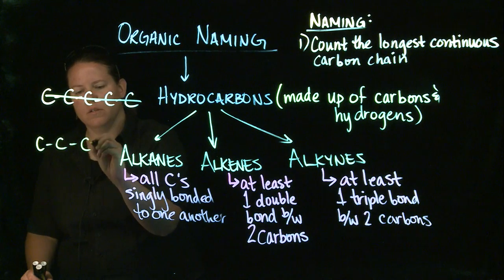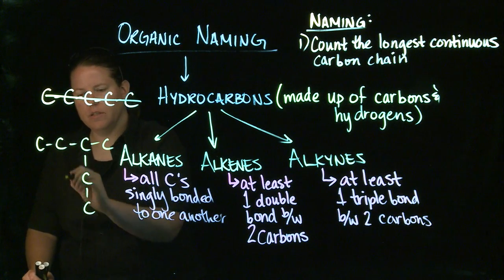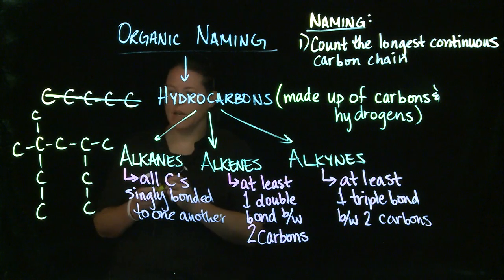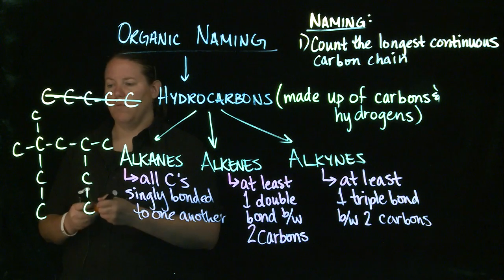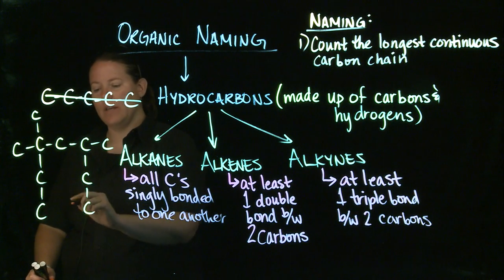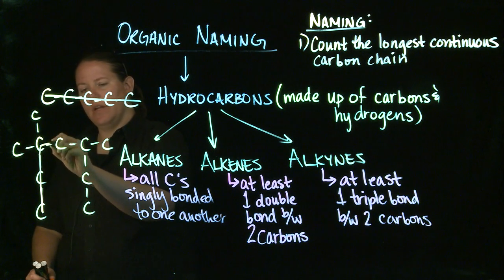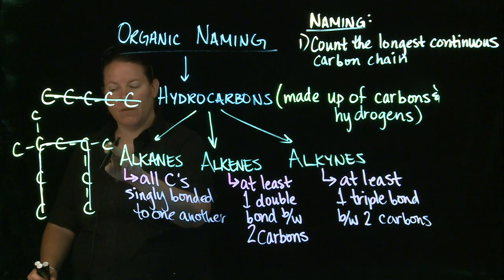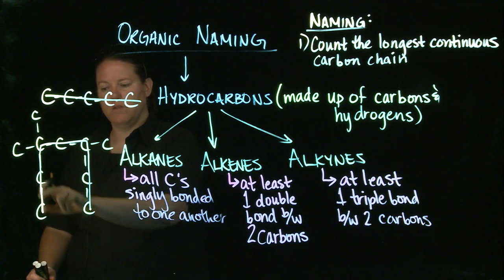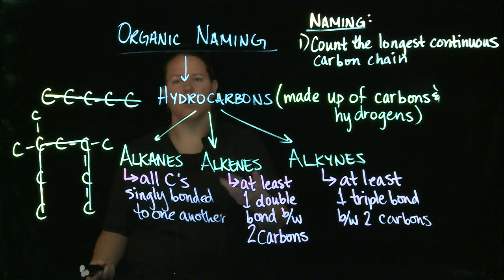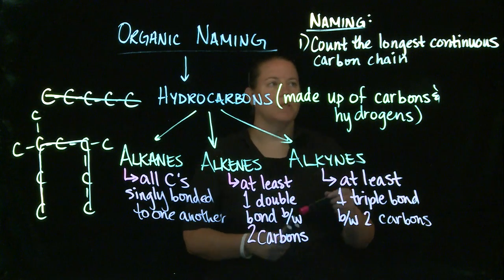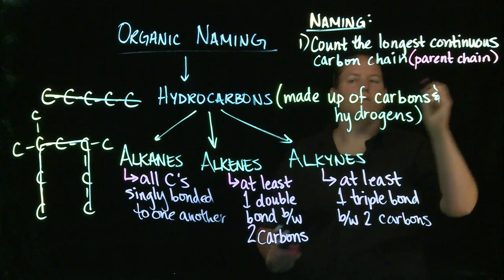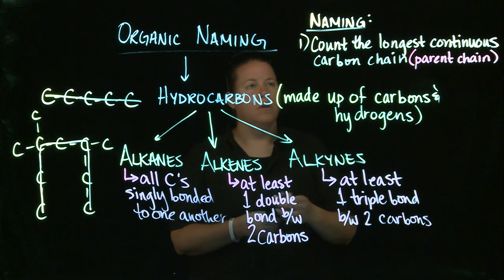Here's something that might not be as obvious. When looking at a branched structure, you have to start your pencil at an end where you can get the most carbons possible — it would not be appropriate to start in the middle. We sometimes call this the parent chain, and you're going to count the longest continuous carbon chain and physically number it.